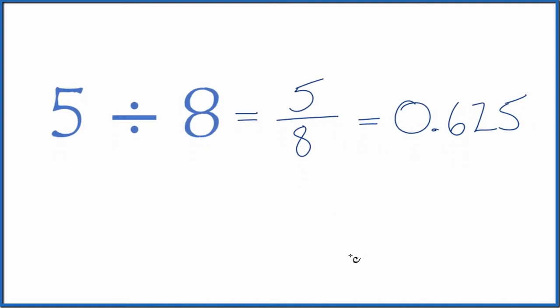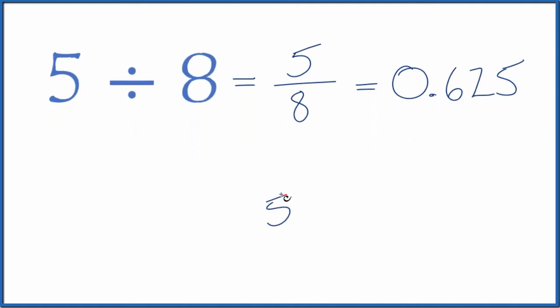The other way we could do this is longhand. We could take five and see how many times eight goes into five. Eight doesn't go into five, so let's call it 50 and put zero point here.